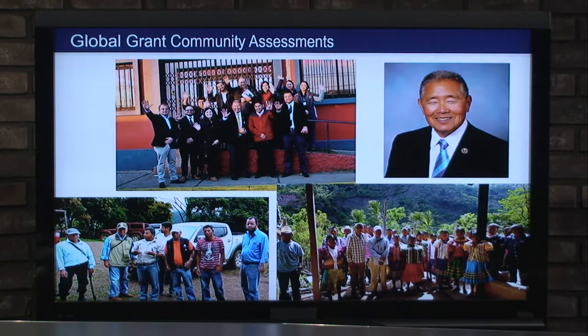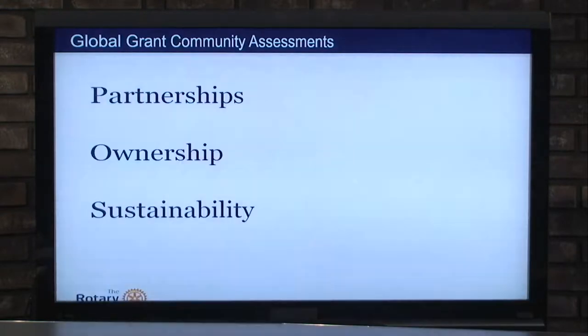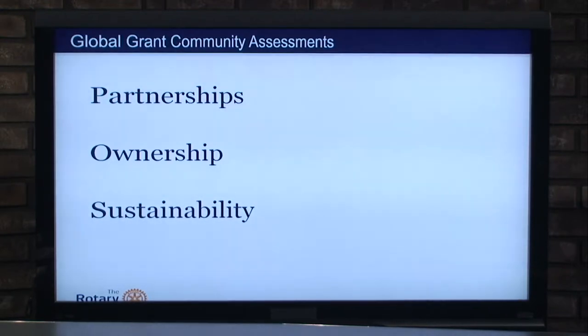Global grants average anywhere from $35,000 to $36,000, all the way up to over half a million dollars for some projects I've evaluated. One thing the global grant community assessment does is create a partnership — and with partnership comes ownership and the sustainability that then occurs because of it.